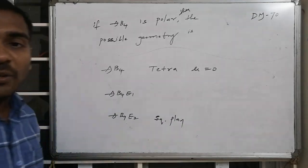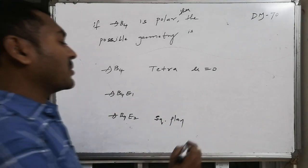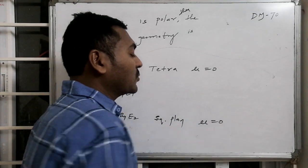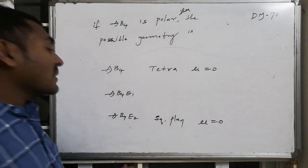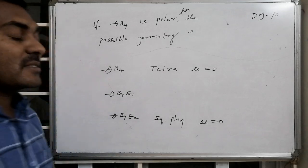one lone pair at the top and another lone pair at the bottom. Then also mu equals zero. Whereas if it is AB4E1, then it is not a regular structure; it